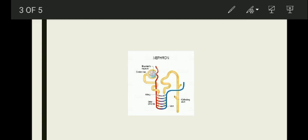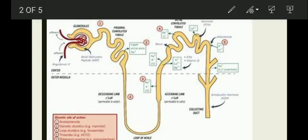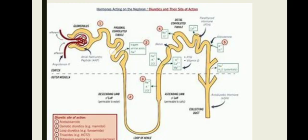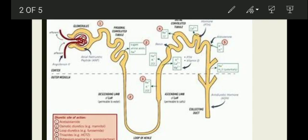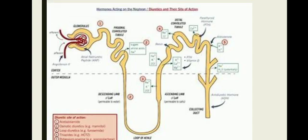The renal tubule has convolutions — folded tube structures. The first convoluted part is called the proximal convoluted tubule (PCT). Next is the U-shaped tubule, which is called the Loop of Henle. It is named after Henle, who first discovered this loop structure.